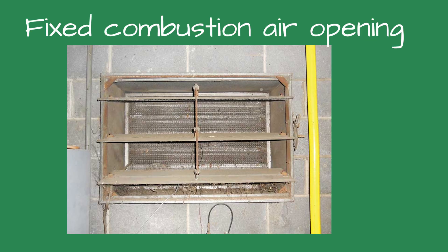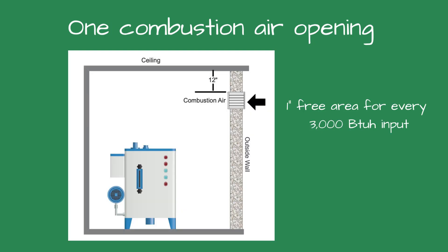Openings in the wall are the most common way of providing combustion air, and this will be the focus of this video. The International Fuel Gas Code has two options for openings in the outside wall. The first option is one opening. The opening must be within a foot of the ceiling, and the size of the opening must be one inch of free area for each 3000 BTUs.